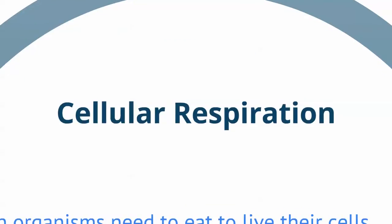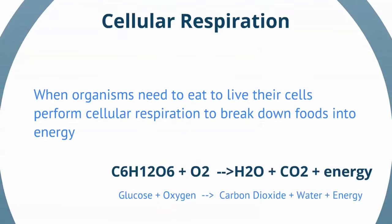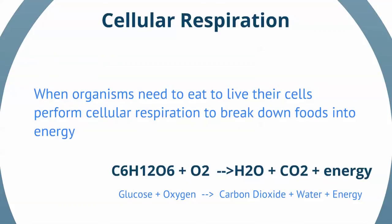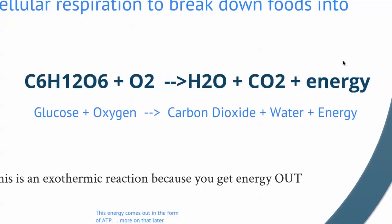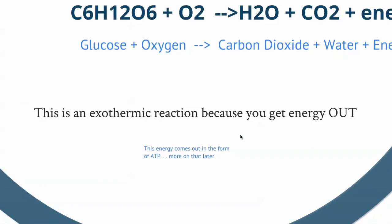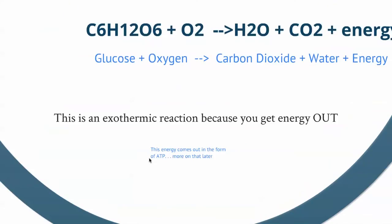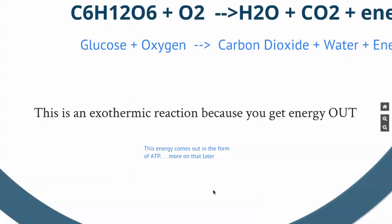If you can't perform photosynthesis and you still need to get energy, you do a process called cellular respiration. When organisms need to eat to live, their cells perform cellular respiration to break down foods into energy. We take glucose and oxygen — which are the products of photosynthesis — and break them apart into carbon dioxide and water. It's an exothermic reaction because you get energy out, and that energy comes out in the form of ATP, which we'll learn more about later.